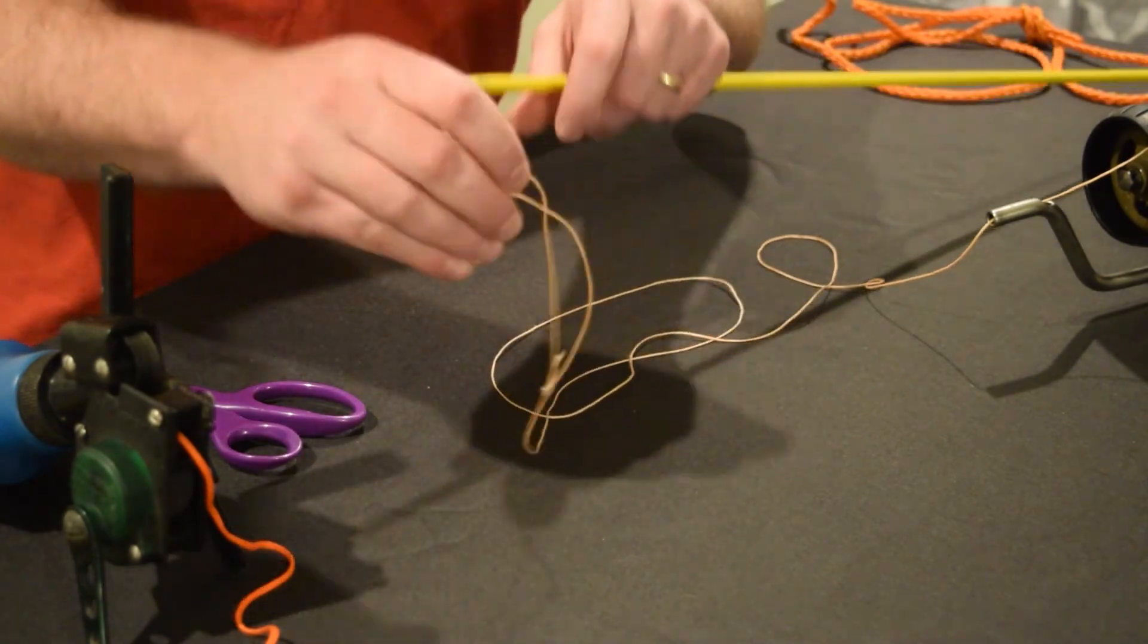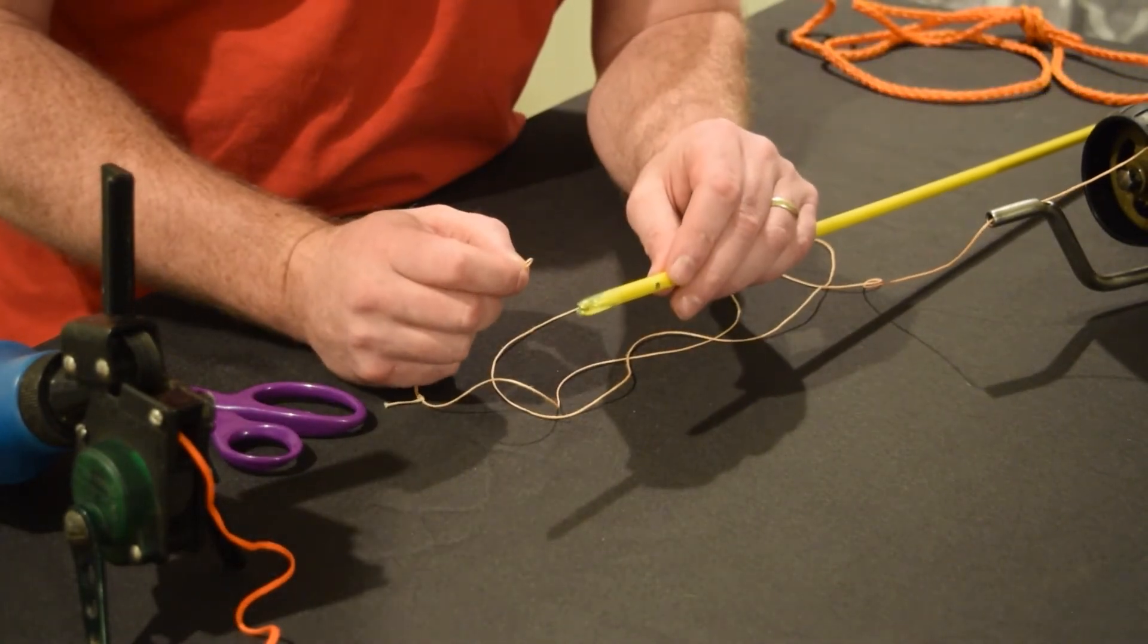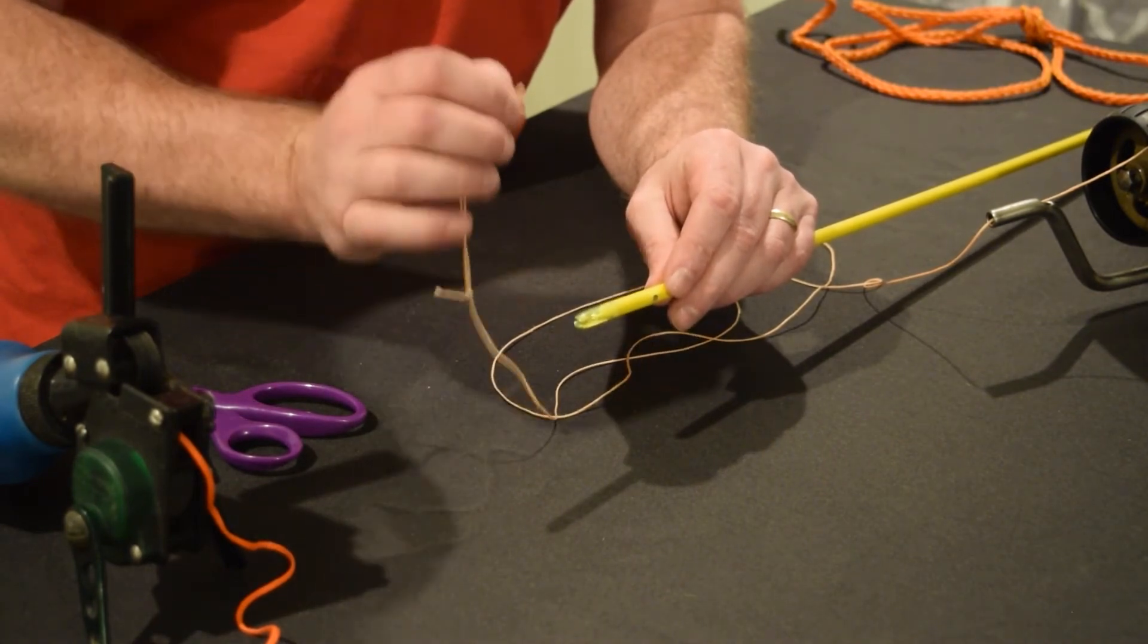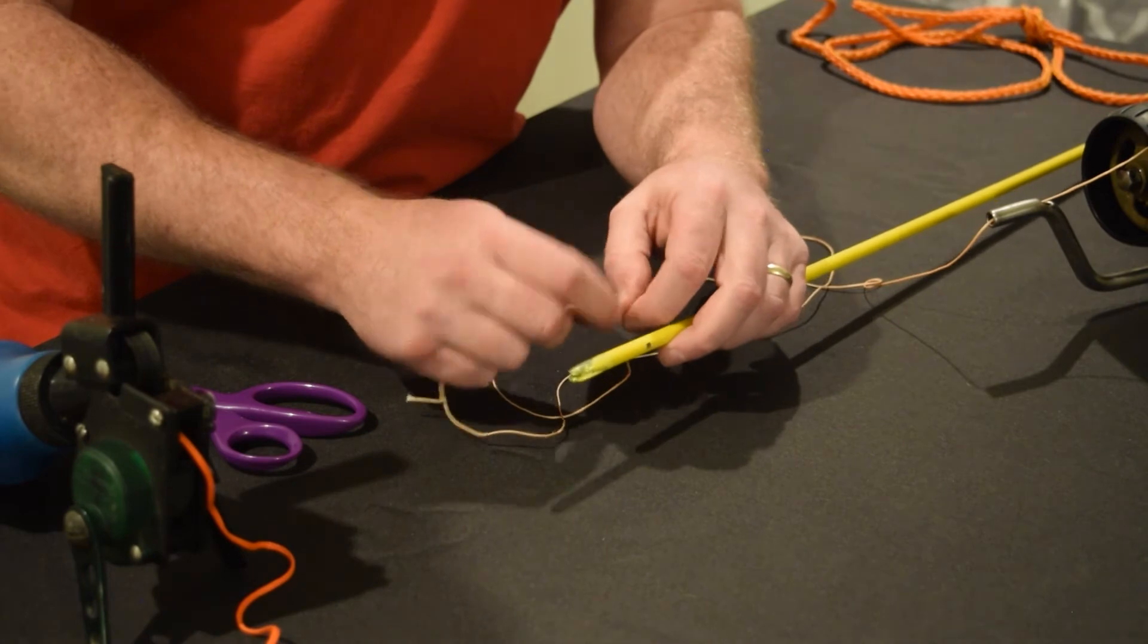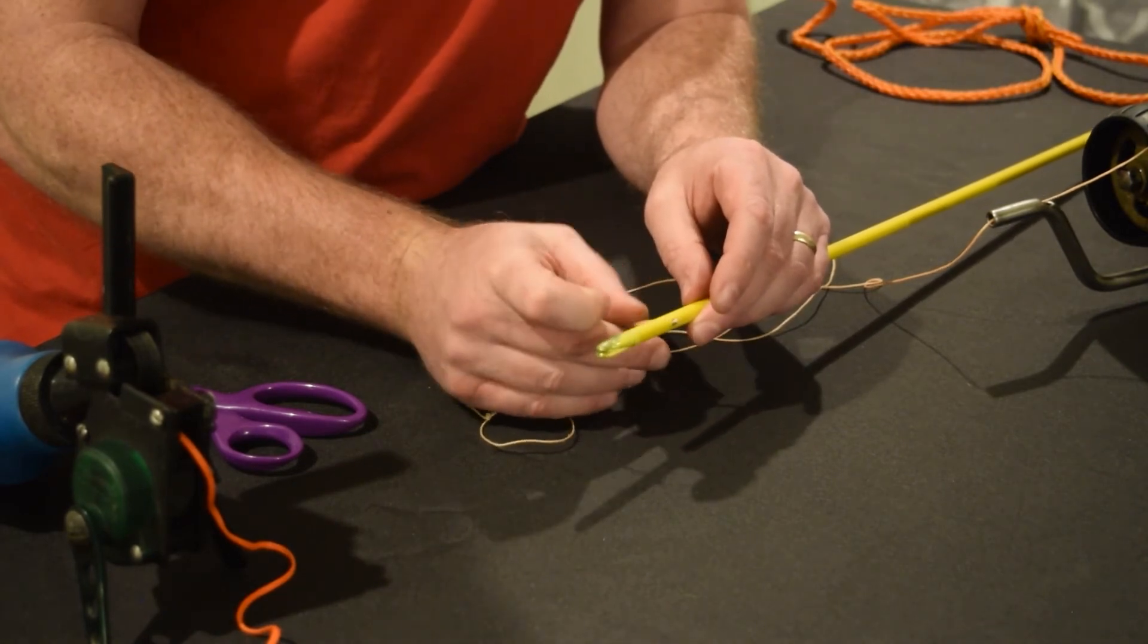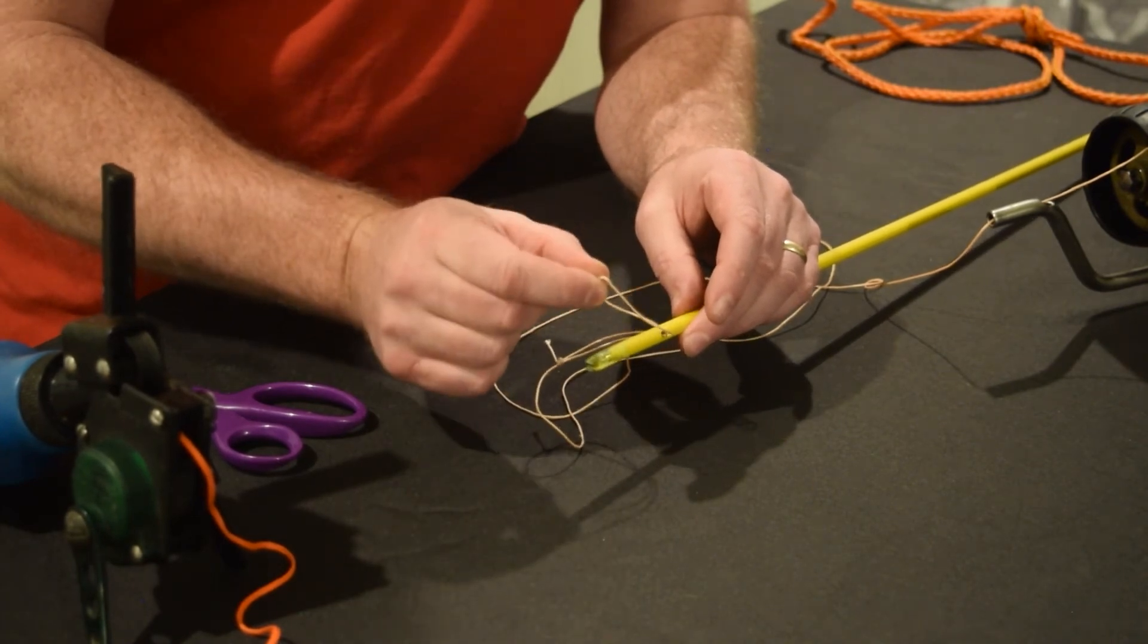Using the loop on your light braid, and again, a reminder, only use light braid line. Do not use the heavy braid line that comes on a bottle reel to do this technique. Pinch the loop and work it through the arrow until it comes out the other side. The most basic tie to the back would just loop over the nock and then pull tight.